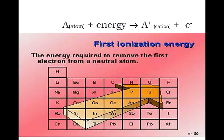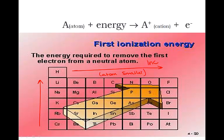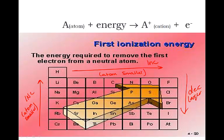Our ionization energy increases as we move across the period and increases as we move up the periodic table. This is tied to the fact that atoms get smaller, so the valence shell gets closer and closer to the nucleus. Conversely, ionization energy decreases going down because the atom gets larger.